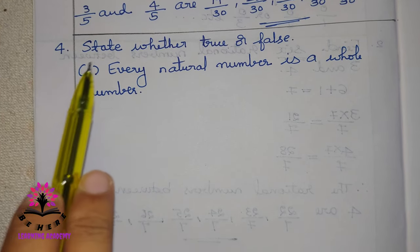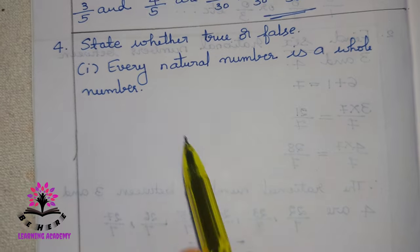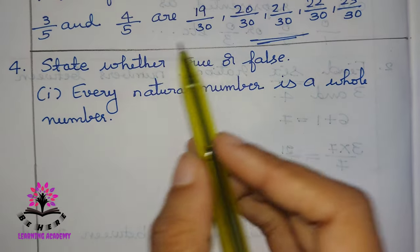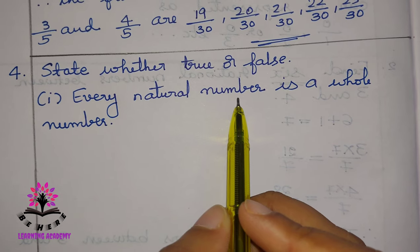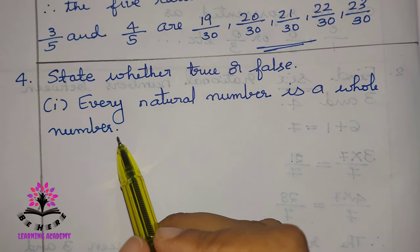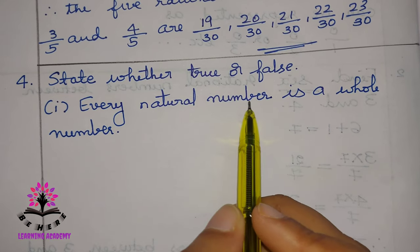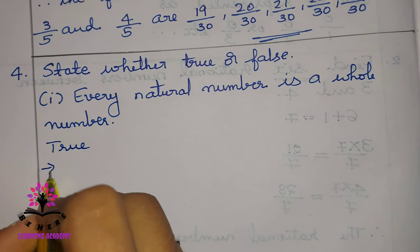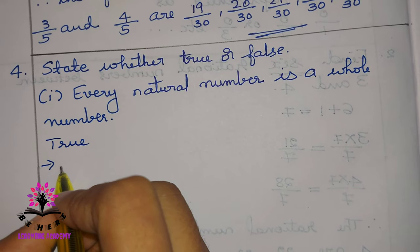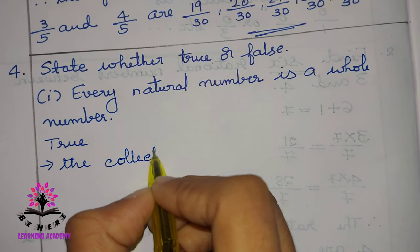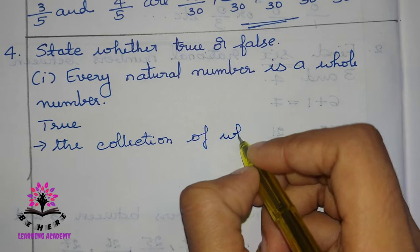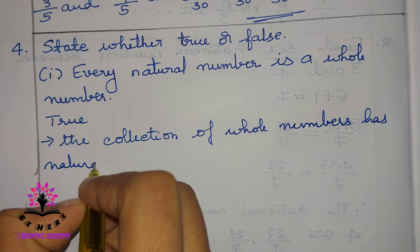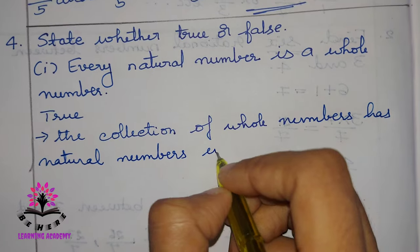The next question asks you to state whether true or false and justify your answer. The first part is: every natural number is a whole number. Natural numbers start with 1, and whole numbers start from 0. So every natural number is a whole number — this is a true statement. The collection of whole numbers has natural numbers in it.